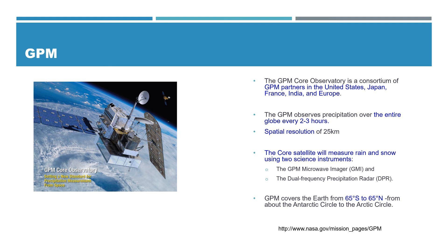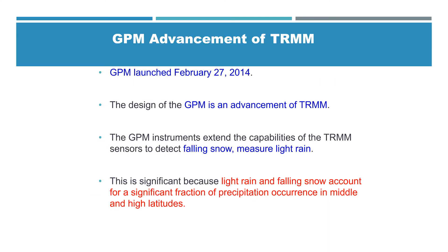There are two instruments: the GMI and the DPR. The GMI is the GPM Microwave Imager, and the DPR is the Dual Frequency Precipitation Radar. GPM covers more areas by extending TRMM's coverage to 65 degrees north and south, which is extended coverage especially in the temperate areas. GPM is designed to measure light rain and falling snow.